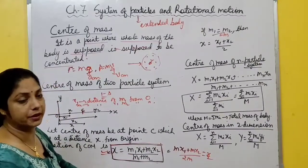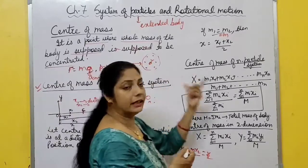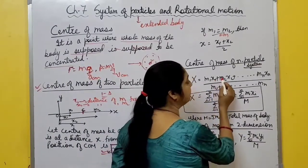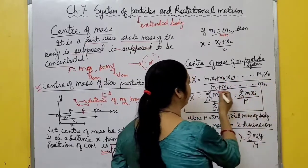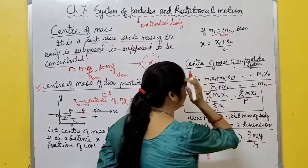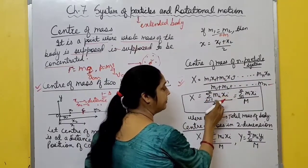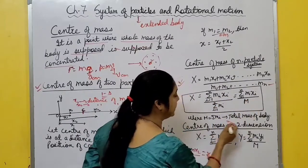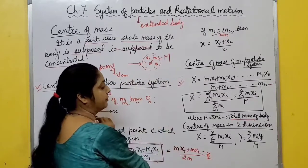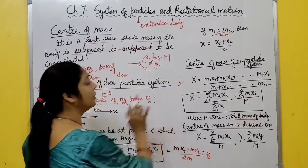For an n-particle system - in an extended body with large number of particles m₁, m₂, m₃...mₙ - the position of center of mass is: x = (m₁x₁ + m₂x₂ + ... + mₙxₙ) / (m₁ + m₂ + ... + mₙ) = Σmᵢxᵢ / M, where M is total mass of the body. This is the position of center of mass for an n-particle system.